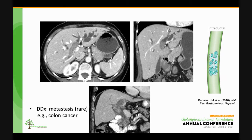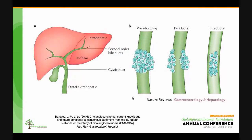Differential diagnosis would include a metastasis, which is rare. The mass-forming type of cholangiocarcinoma is the most common type in the intrahepatic location, and as its name suggests, it's a mass with rounded or lobulated margins. In the perihilar location, the most common type is the periductal, or a periductal plus mass-forming type, so I'll describe these two together.